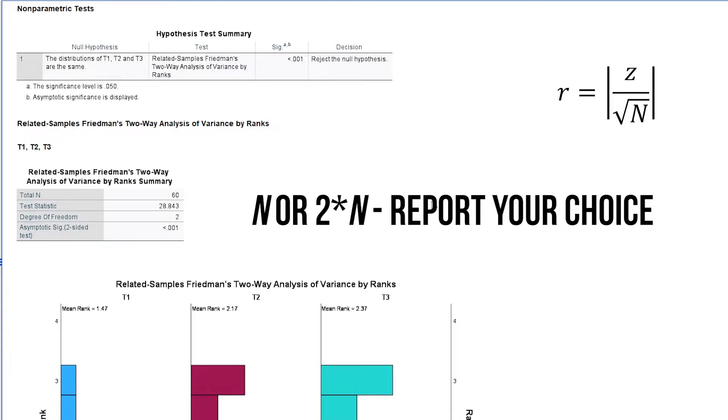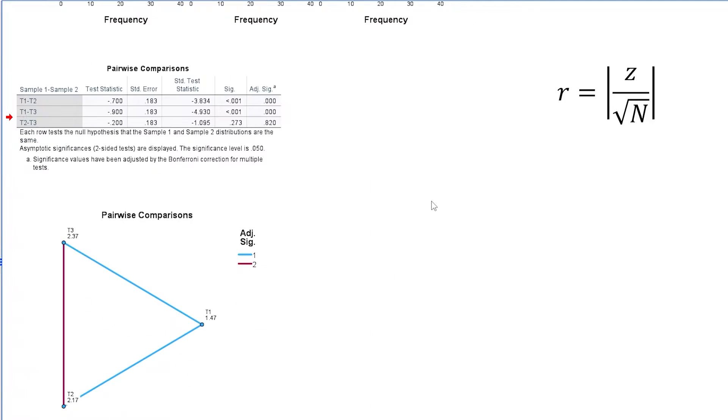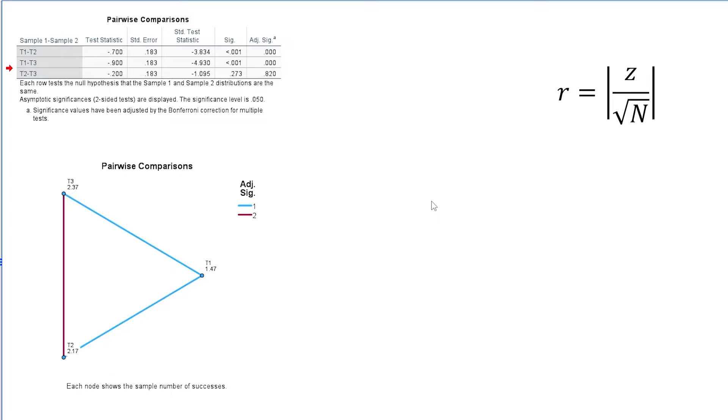Whatever you favor, I would advise reporting that accordingly. When we look closely in the pairwise comparisons table, you can spot the standardized test statistic for each comparison regardless of the p-value. I have two pairwise comparisons with sufficiently low p-values after adjusting for alpha error inflation.